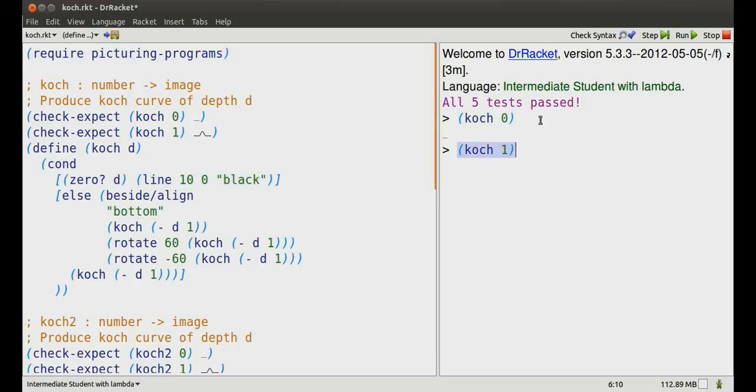Koch 1 is built up from what you know about Koch 0. Look at the definition. Replace all the d's by 1. And now look at those question-answer pairs. The first one asks, is 1 equal to 0? Of course not. So skip that and move on to the else.